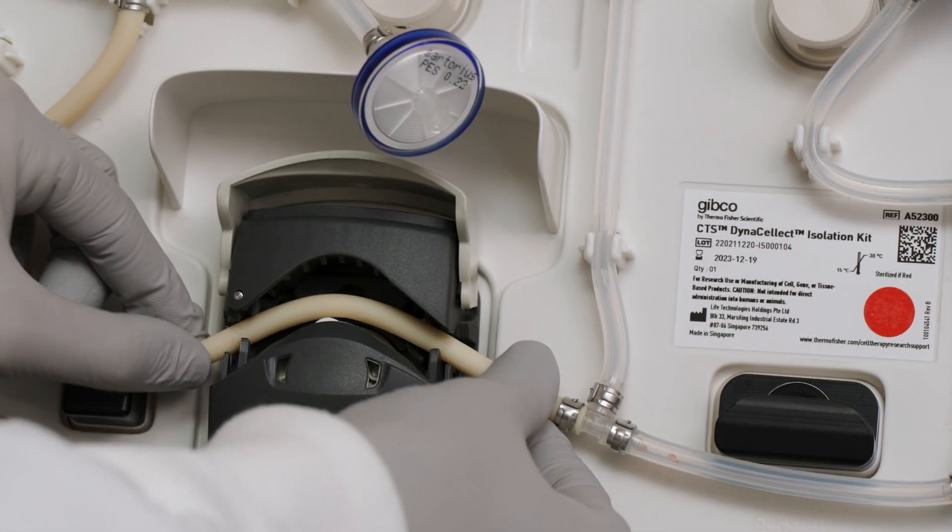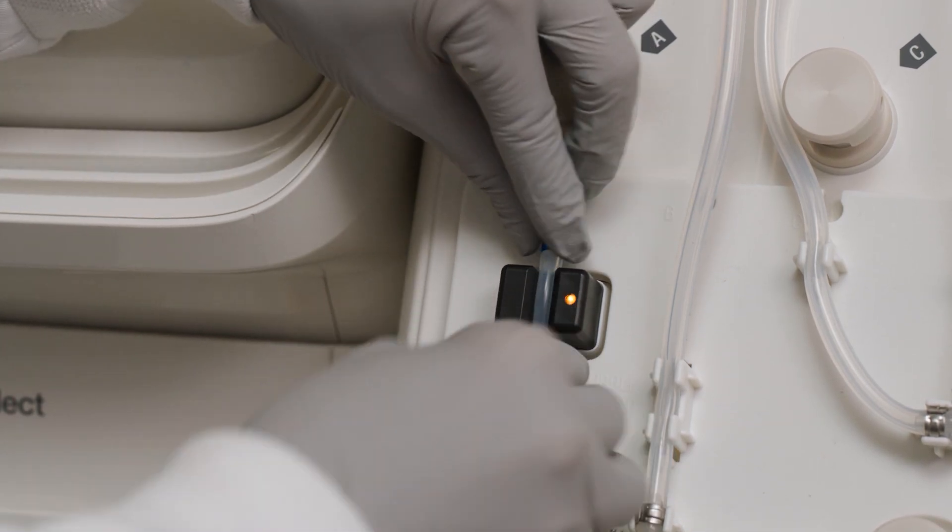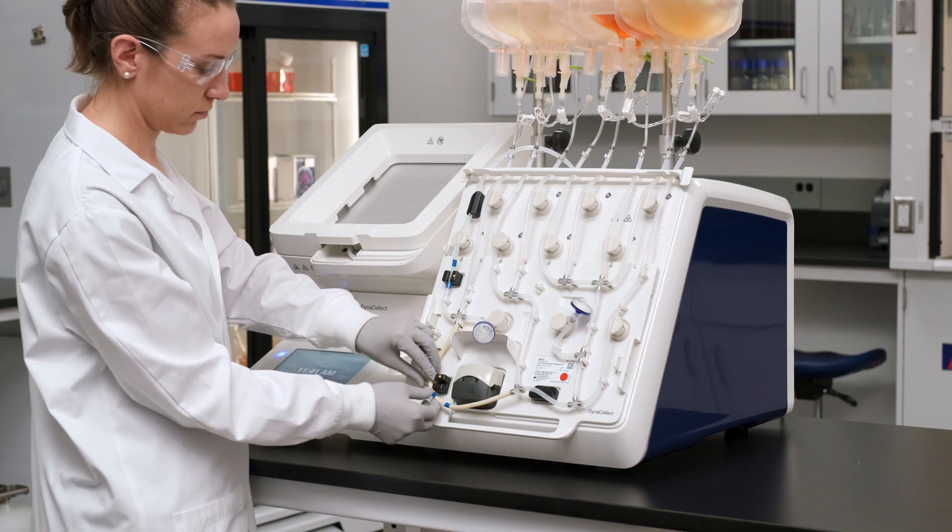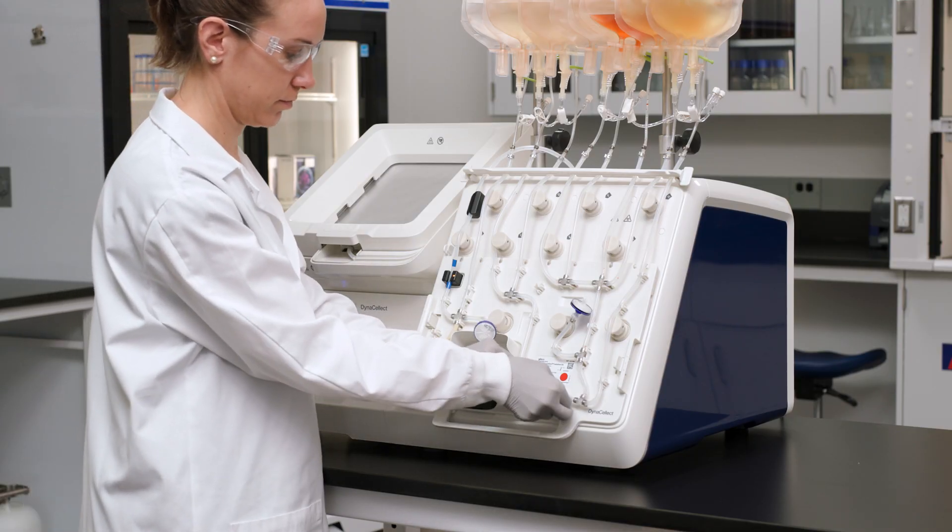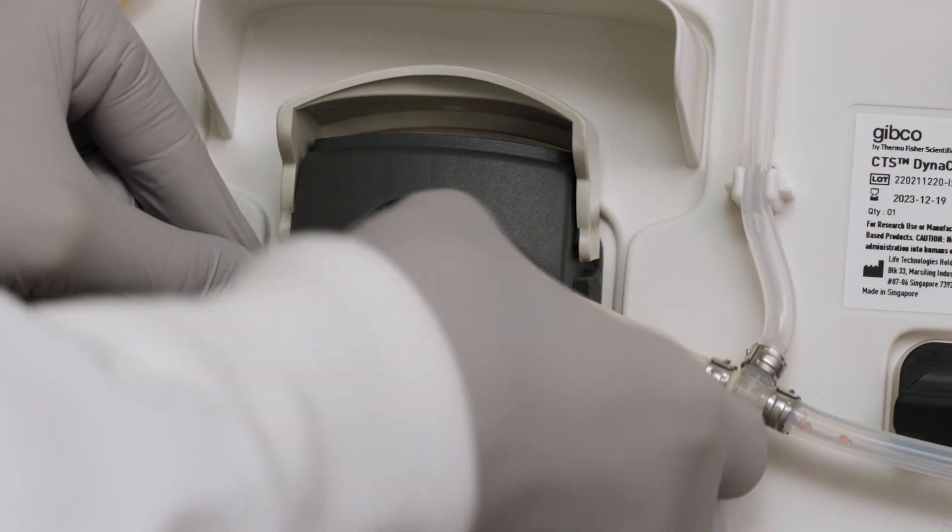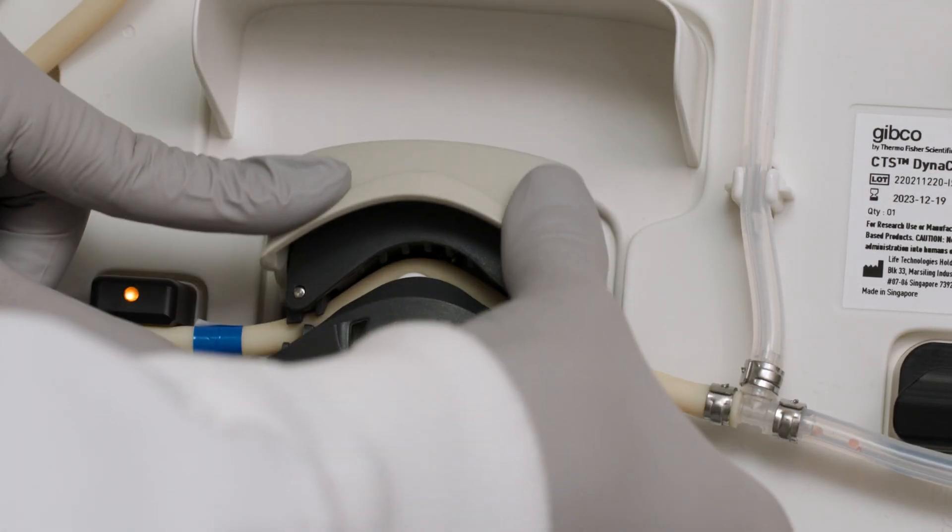Next, install tubes in the pump, bubble, and pressure sensors. Ensure that the tubes are seated all the way into the recess of the sensors. Insert the tube into the pump and close the pump lid.